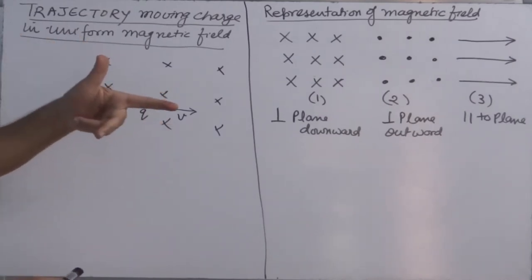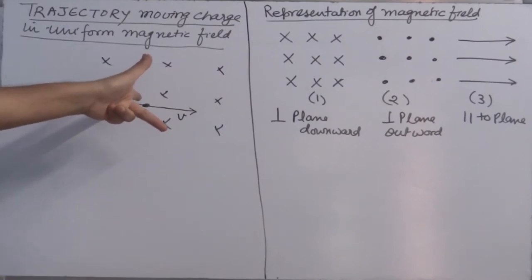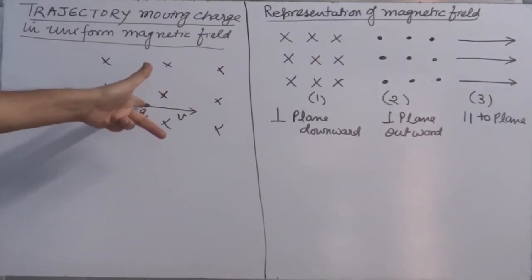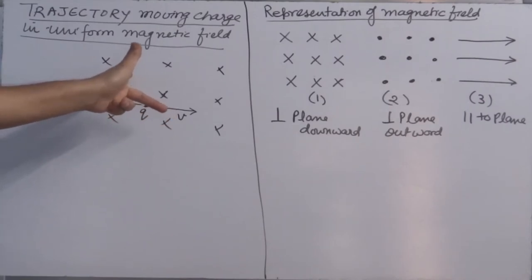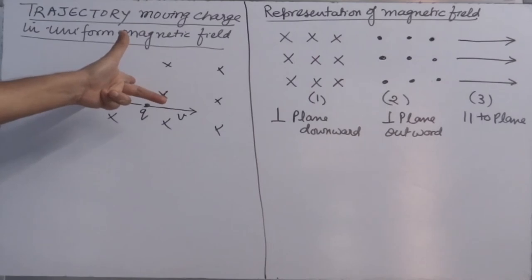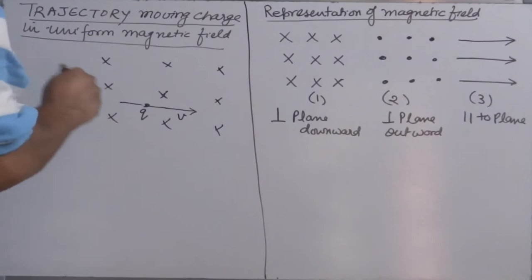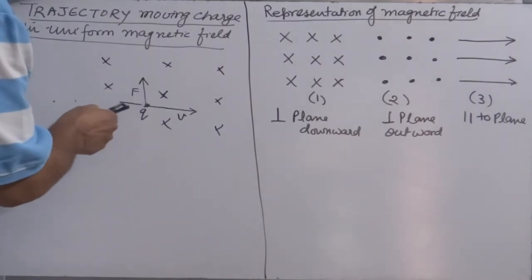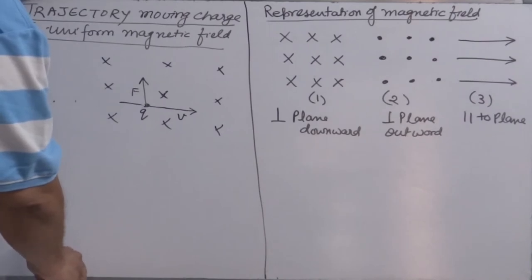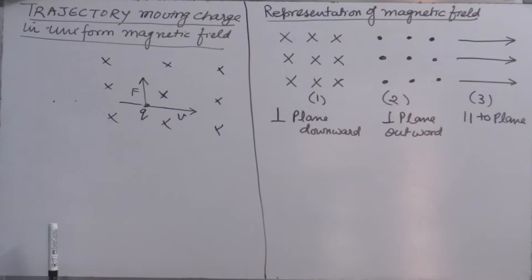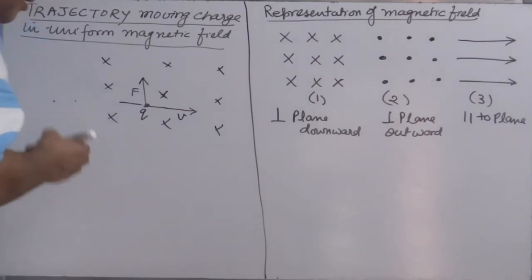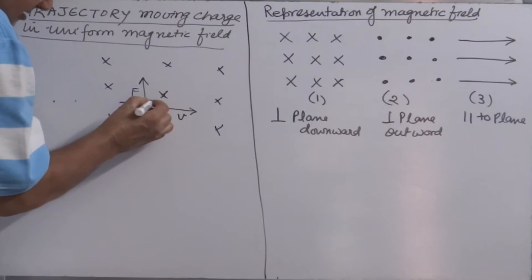Use Fleming's left-hand rule. The direction of the magnetic field is perpendicular to the plane inward. This is the direction of velocity. Then the direction of force is upward — the thumb points upward, so the force is acting upward. The moment the charge enters the magnetic field, will it start moving in the direction of force? The answer is no, because it is already set into motion.